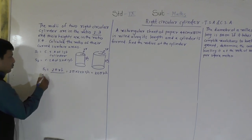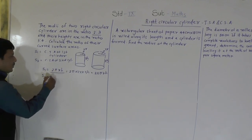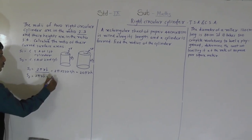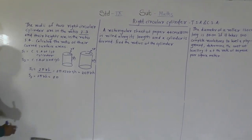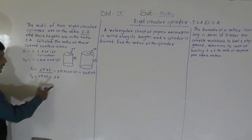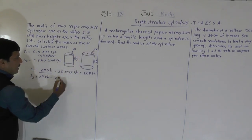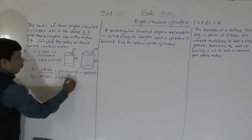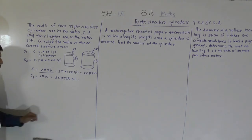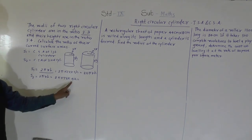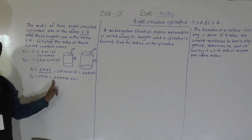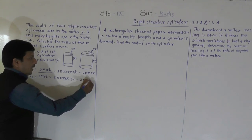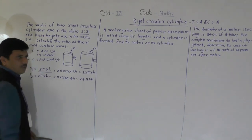Now we find S2 using the same formula 2πrh. We substitute: 2π into radius 3r and height 4h. The product of 3 and 4 is 12, and 2 × 12 = 24. So S2 = 24πrh.